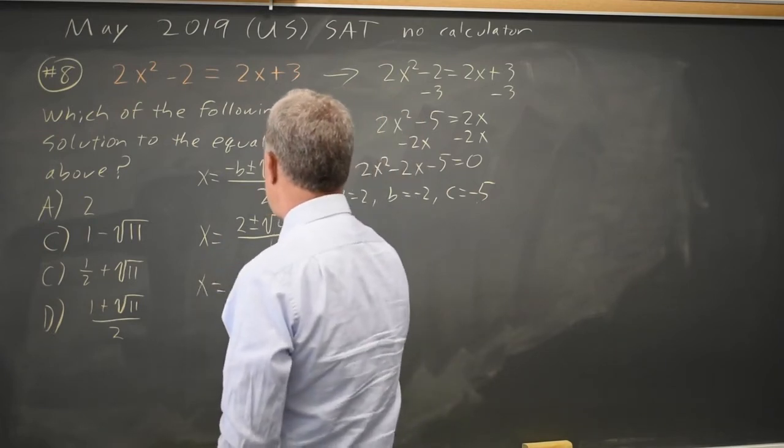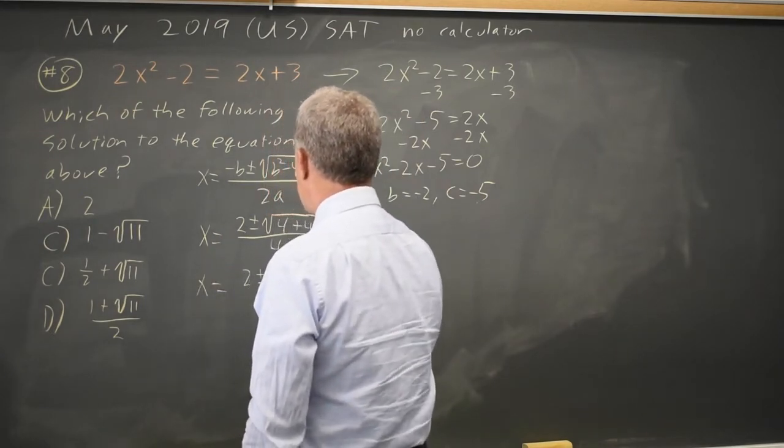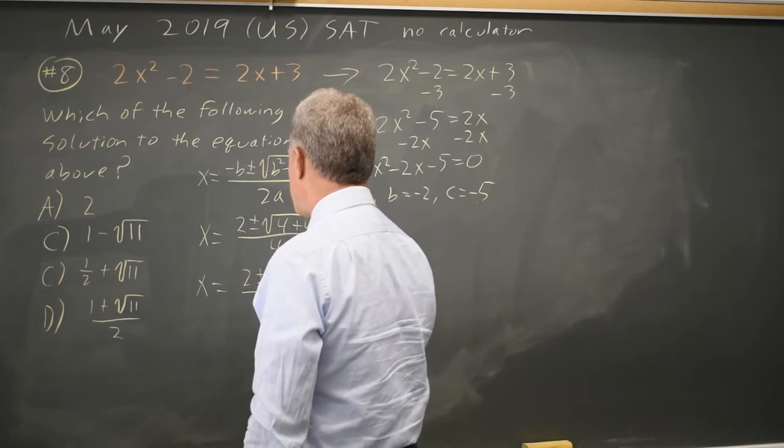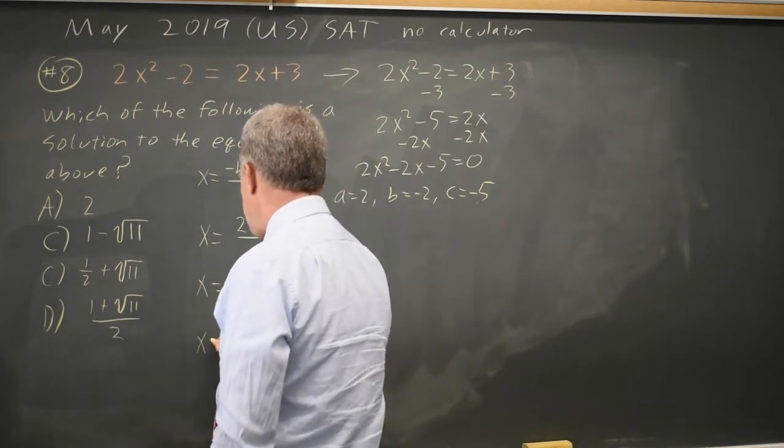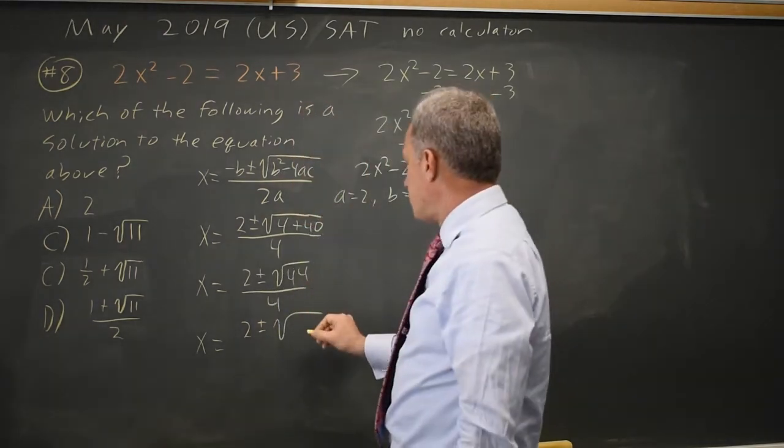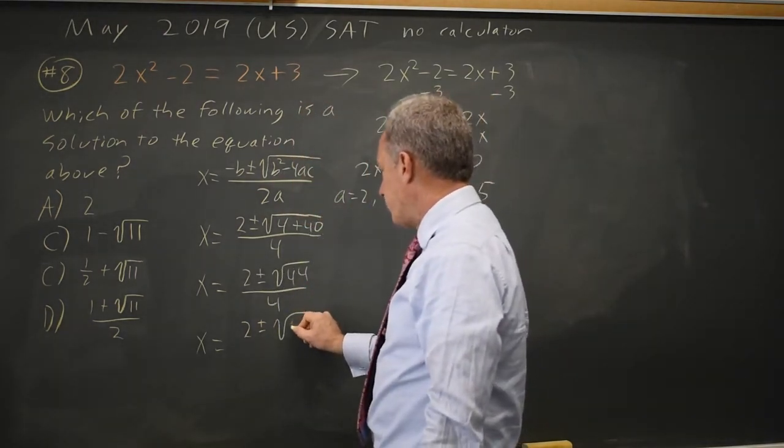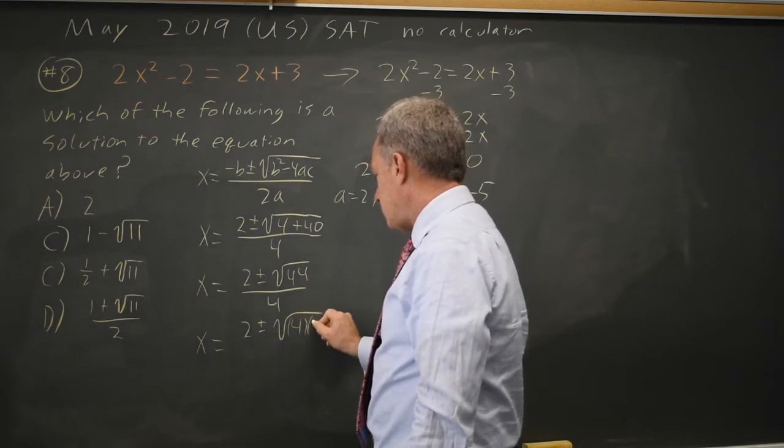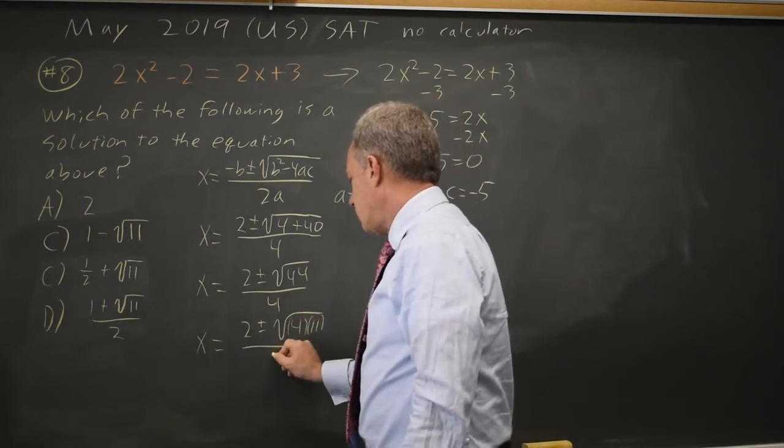So x equals 2 plus or minus square root of 44 over 4, which I'm going to write as x equals 2 plus or minus root of 4 times 11 over 4.